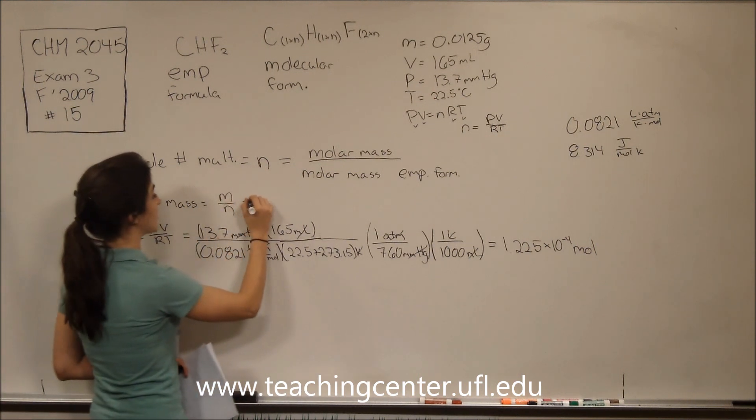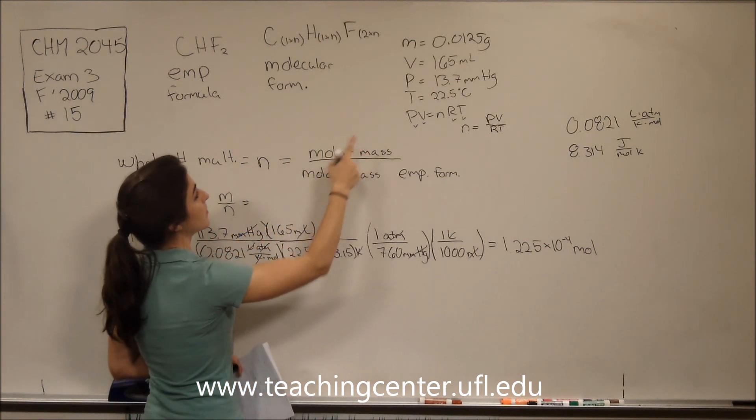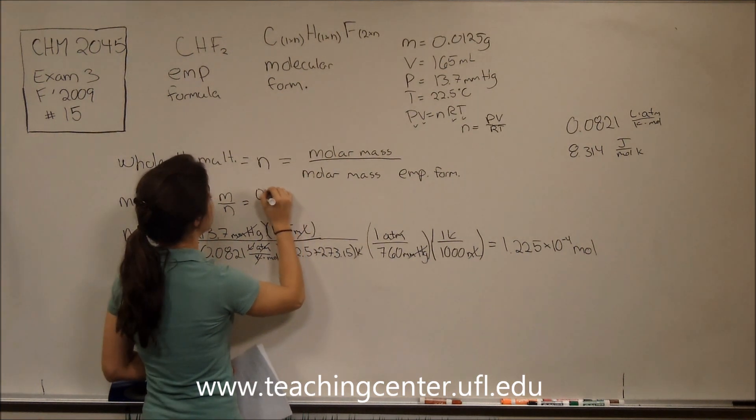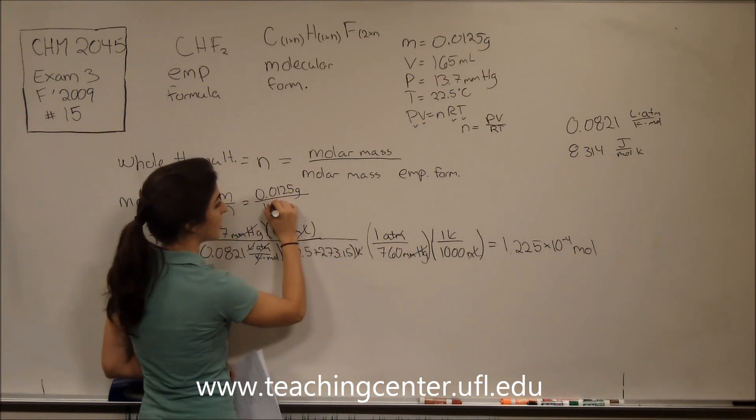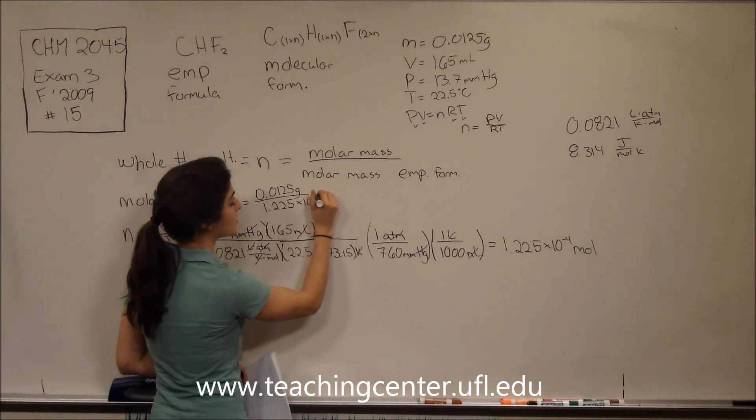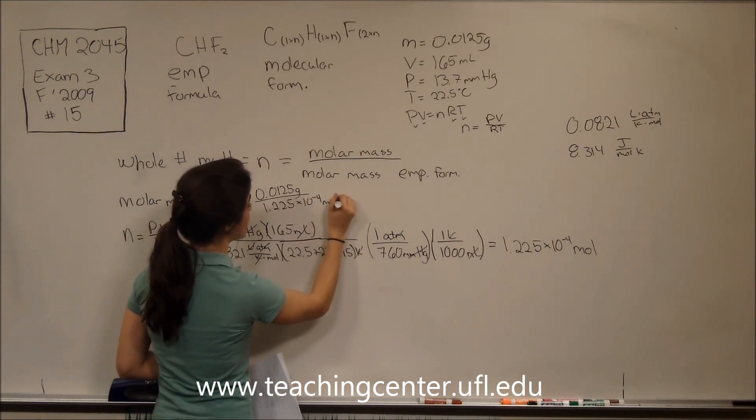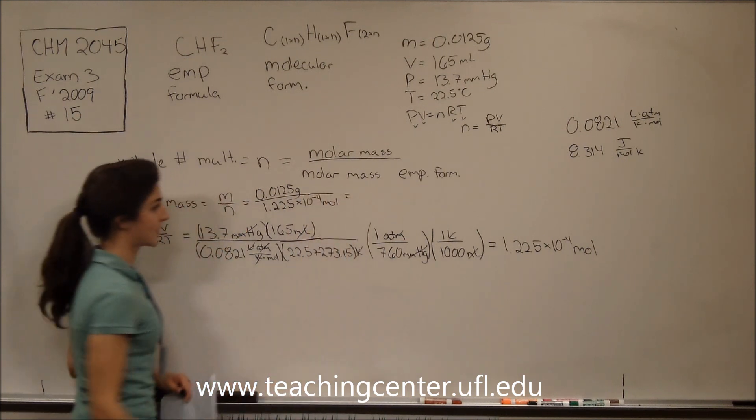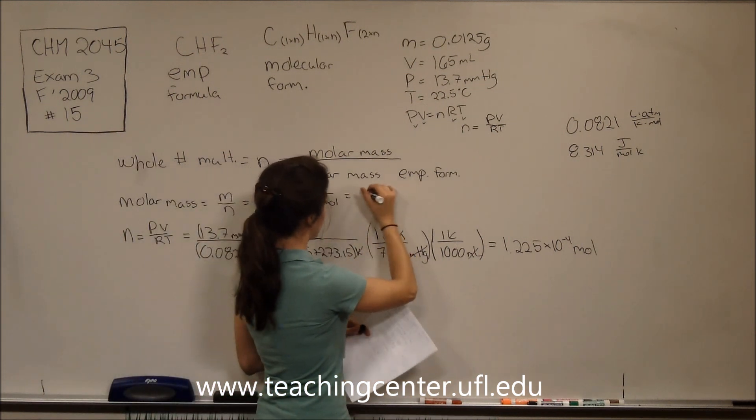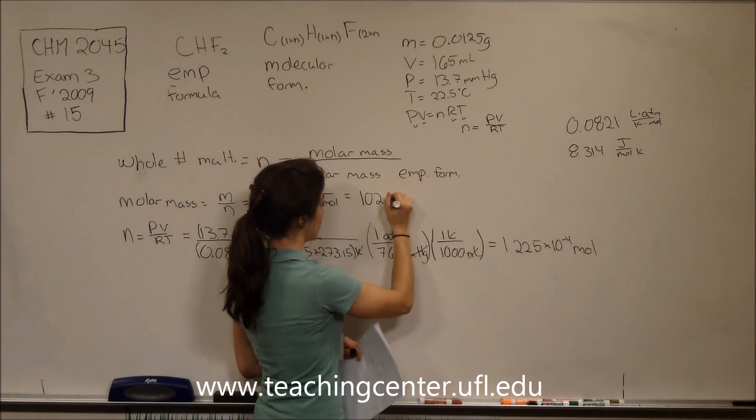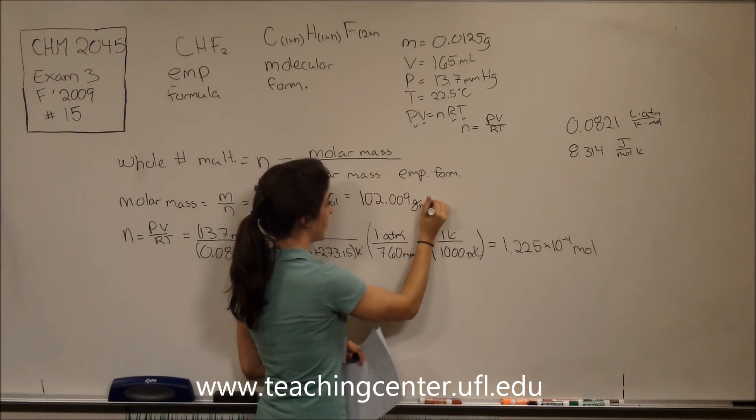So molar mass equals 0.0125 grams divided by the number of moles, which is 1.225 times 10 to the negative 4 moles. So plugging this into our calculator, we get 102.009 grams per mole.